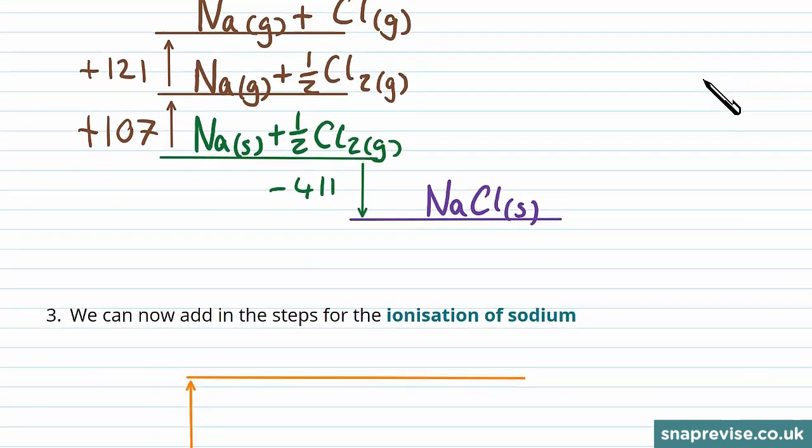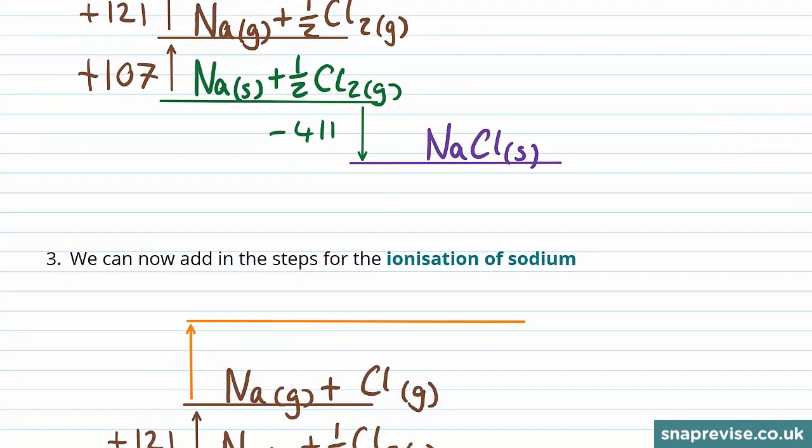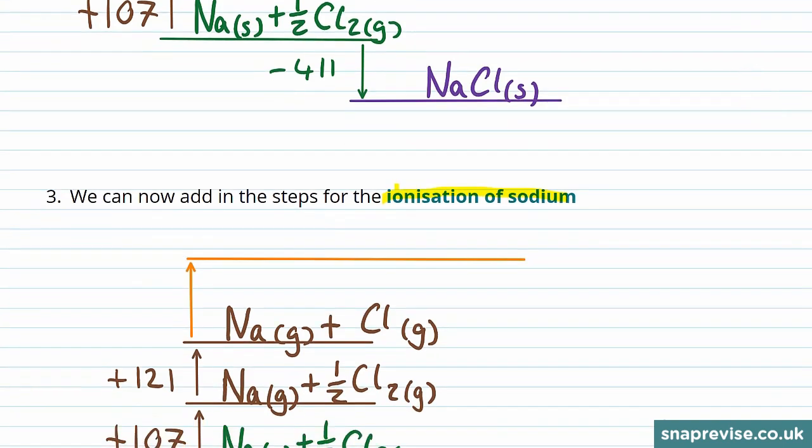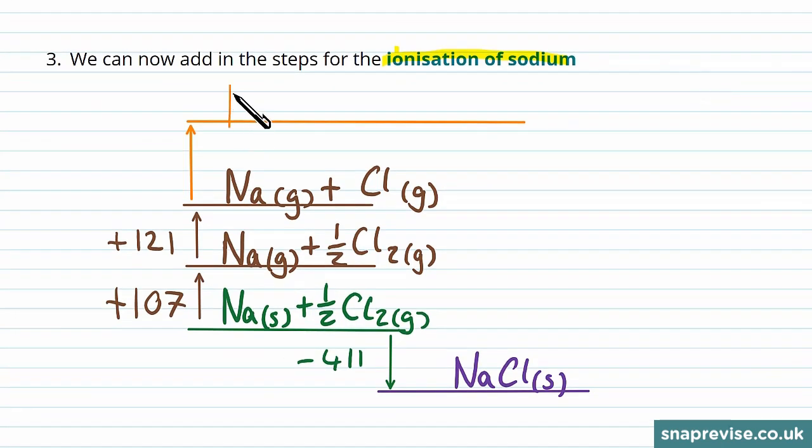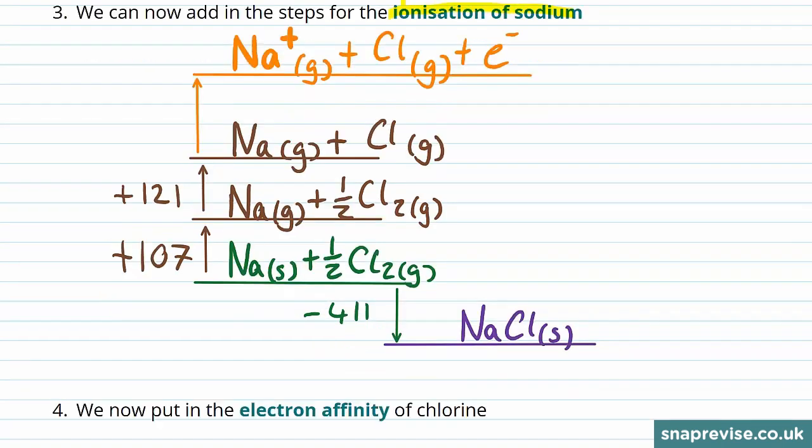Now we want to give the atoms the right charge, so we're going to ionise the sodium first of all. Remember this involves taking an electron away from sodium, so we're left with a positive sodium ion, which is again gaseous. We've still just got the chlorine as we had on the previous rung, but now we've also got to include an electron which we've pulled away. The energy taken to do this is 496 kJ per mole.